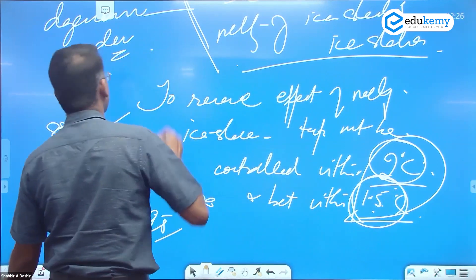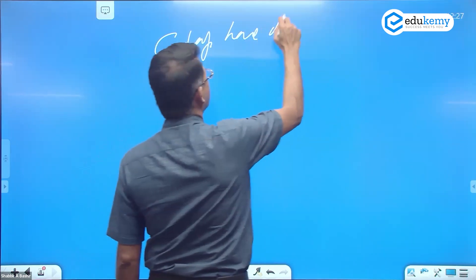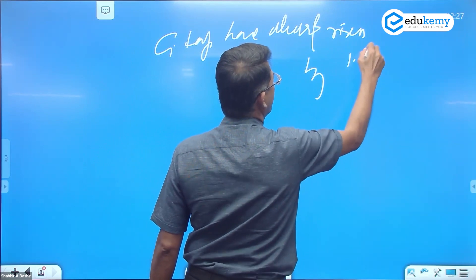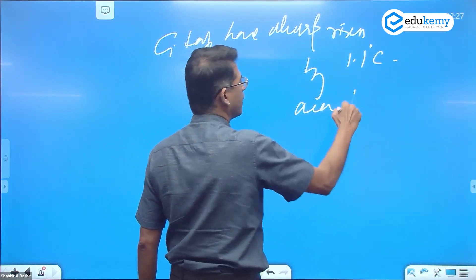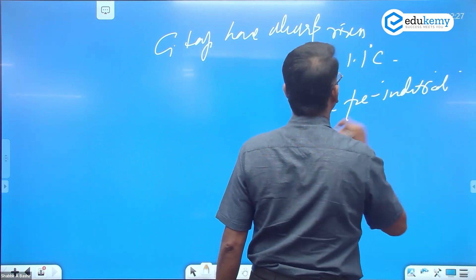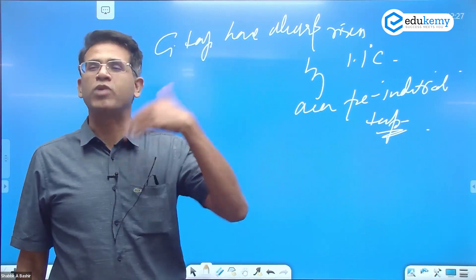But the problem is that the global temperatures have already risen by 1.1 centigrade over the pre-industrial temperatures. It has already increased.